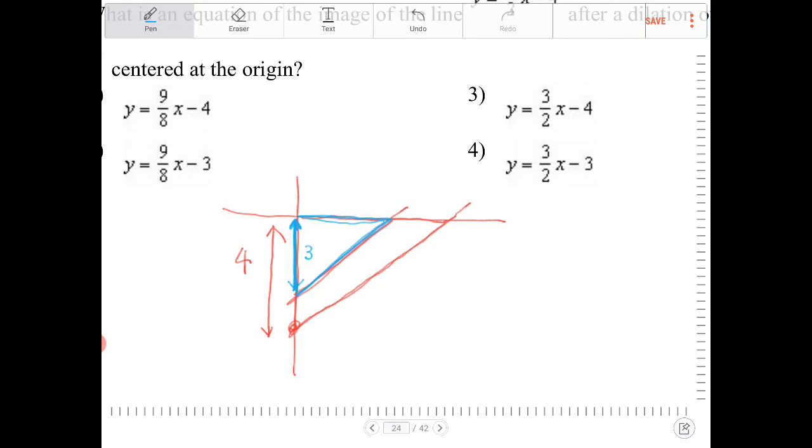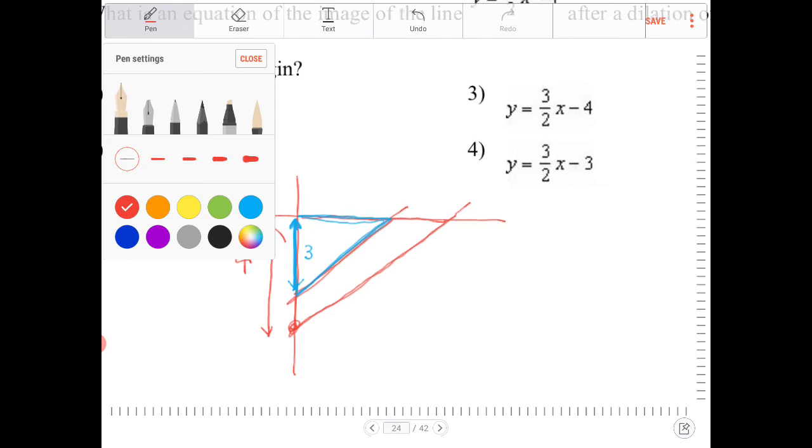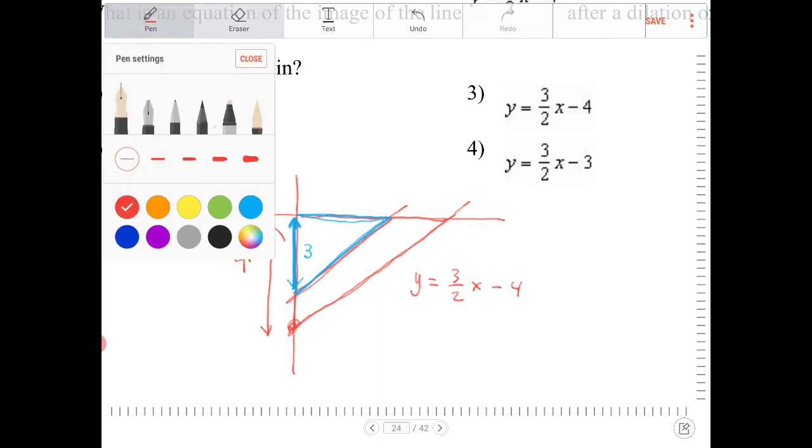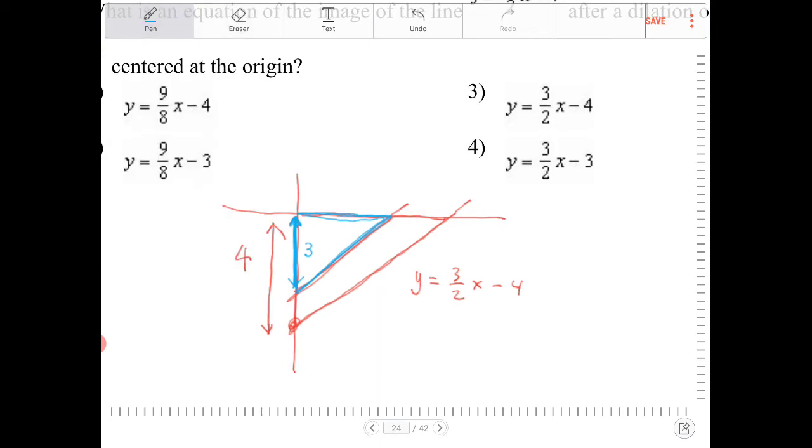So the original line, which had an equation of y equals 3 halves x minus 4, the new line, which I'm going to write in blue now, will have the same slope, but a different y-intercept. It's going to be minus 3.